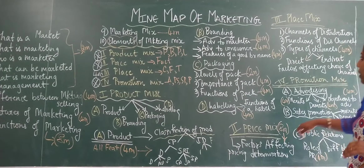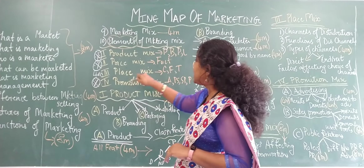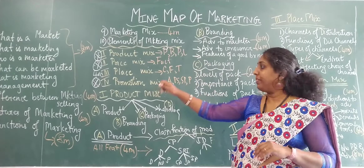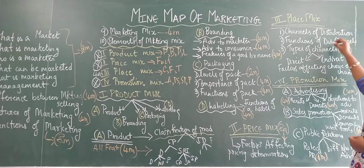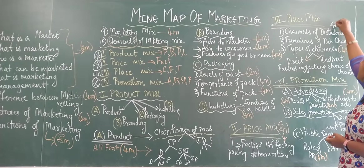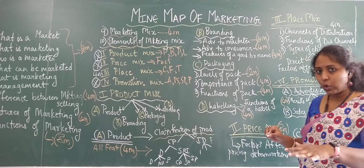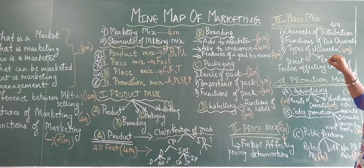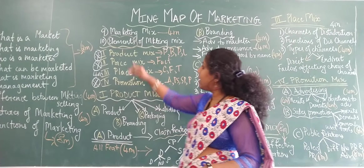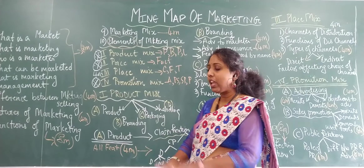The third element of marketing mix is place mix, also called physical distribution. Under place mix, we have channels of distribution, which may come for a four marker; functions of distribution channel — please go through it; and types of channels, that is direct channel and indirect channel, which usually comes as a four marker. There are also factors affecting the choice of channels. Place mix is relatively relaxed, but please go through it.